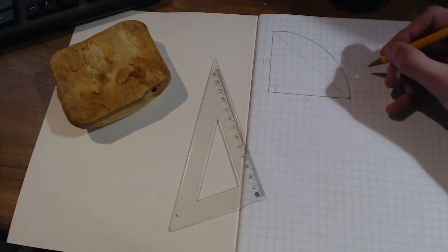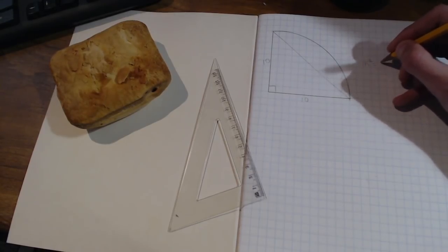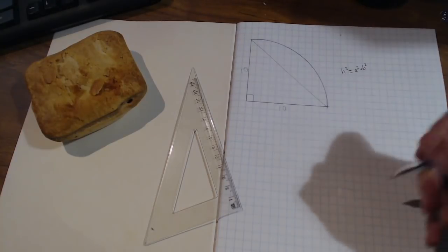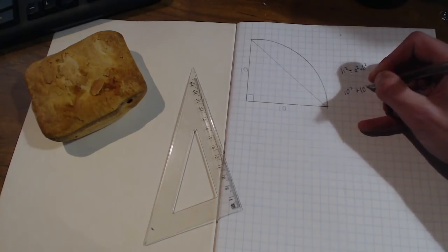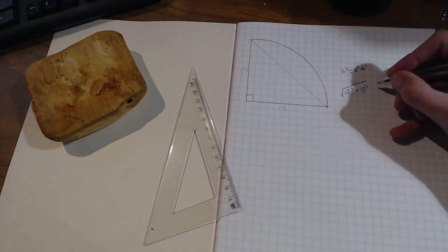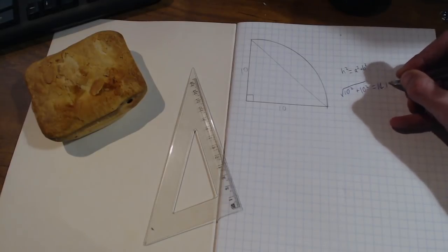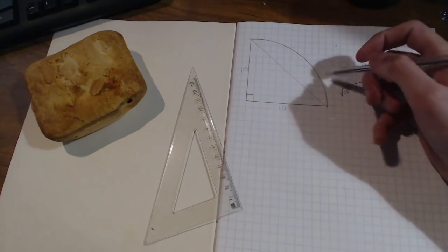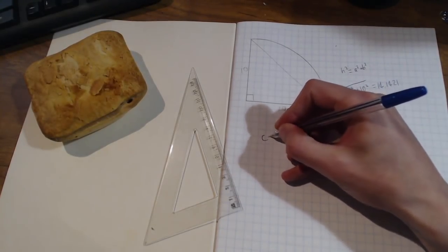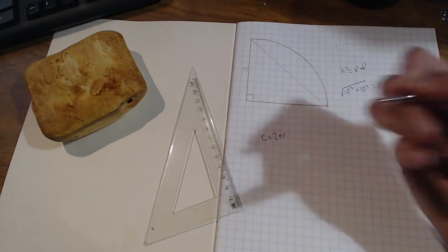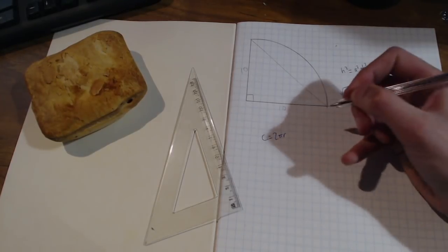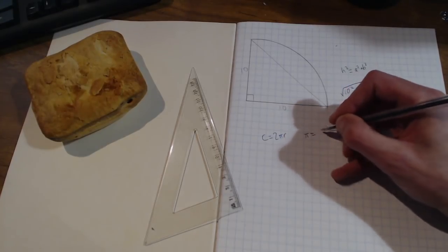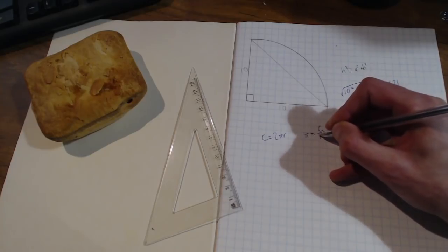For those that forgot the Pythagorean theorem, it is simply the hypotenuse, otherwise h squared equals a squared plus b squared. Our hypotenuse here is simply 10 squared plus 10 squared and then we just get the square root of that. When I put that into the calculator it comes out to 14.1421. Now, seeing as the formula to work out the circumference of a circle is c equals 2 pi r, we can actually rearrange that equation to work out what pi is. That equation would be pi equals c over 2r.